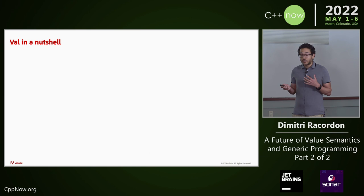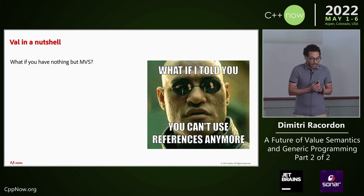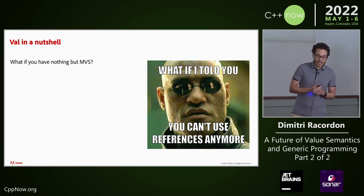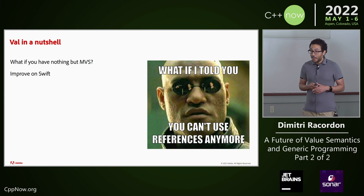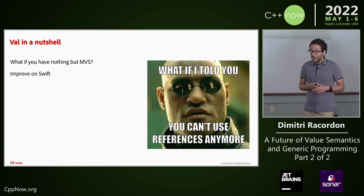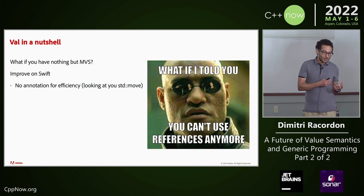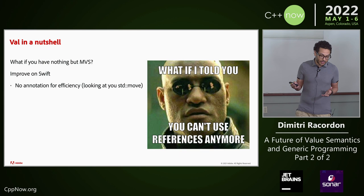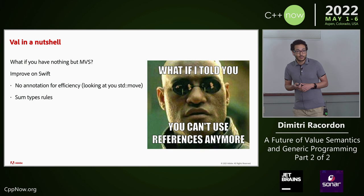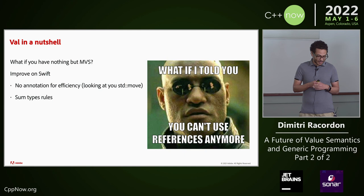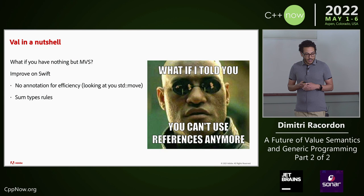Since it is based on Swift, other questions became how to improve on Swift — especially with regard to non-copyable types, generics, for safe higher-level systems programming, and concurrency. Dave and I are open-ended people. There are a bunch of things we wanted to do differently from Swift. For example: no type annotations for efficiency (no std::move), actual sum types, no type-based overloading because it's evil, and a very simple access control model.